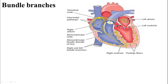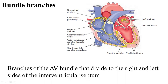The myocardium is the muscle layer of the heart. Purkinje fibers innervate each individual muscle cell of the heart. The bundle branches divide to the right and left sides of the interventricular septum.